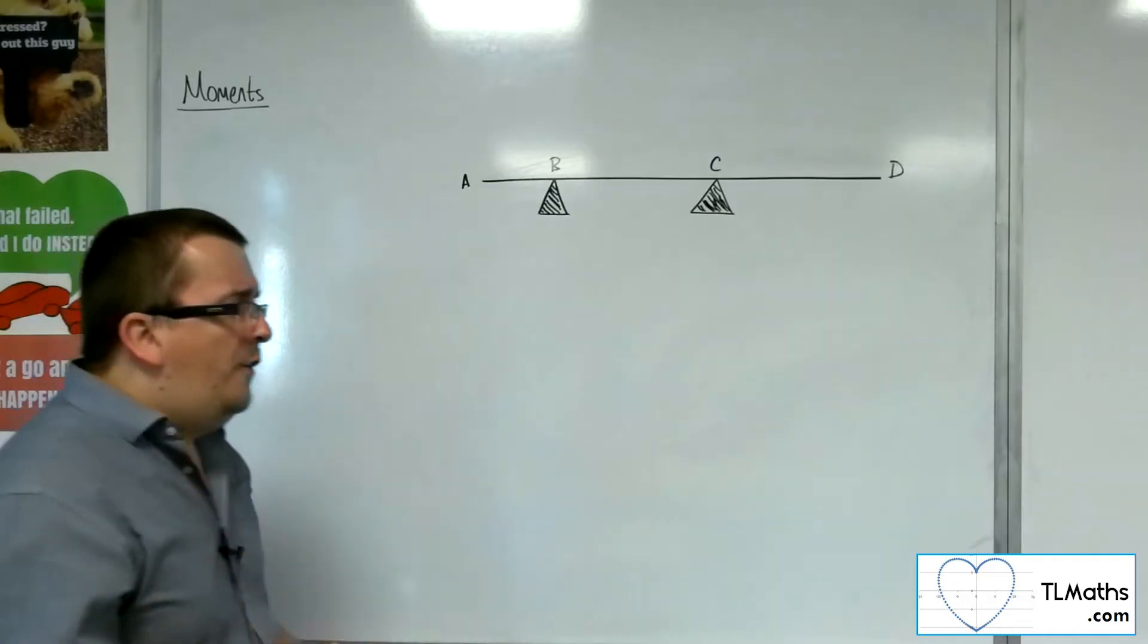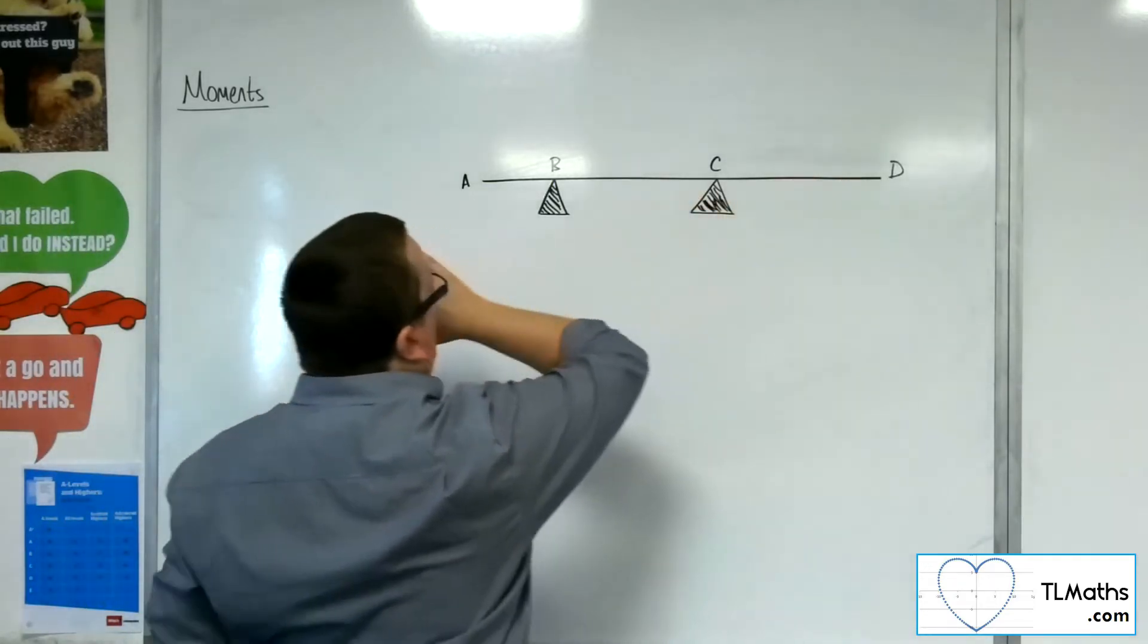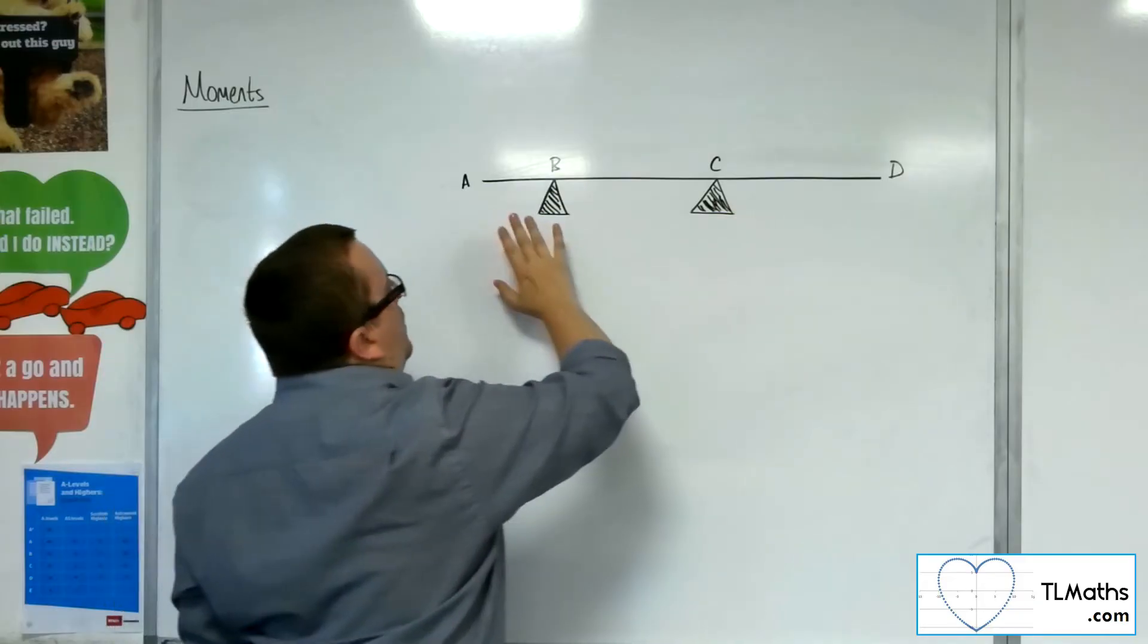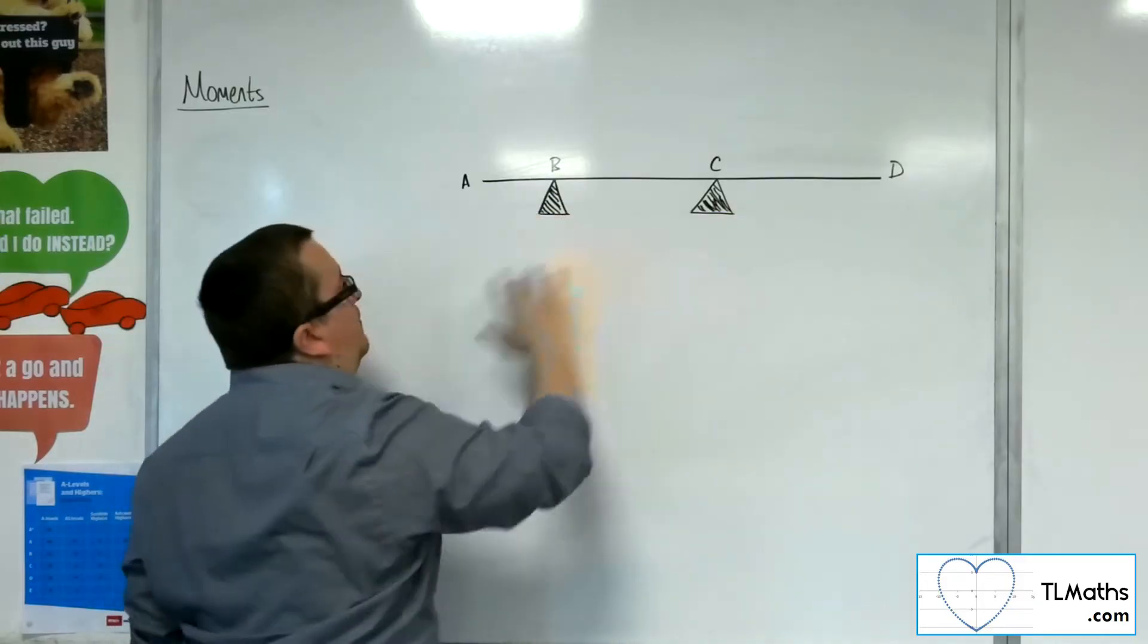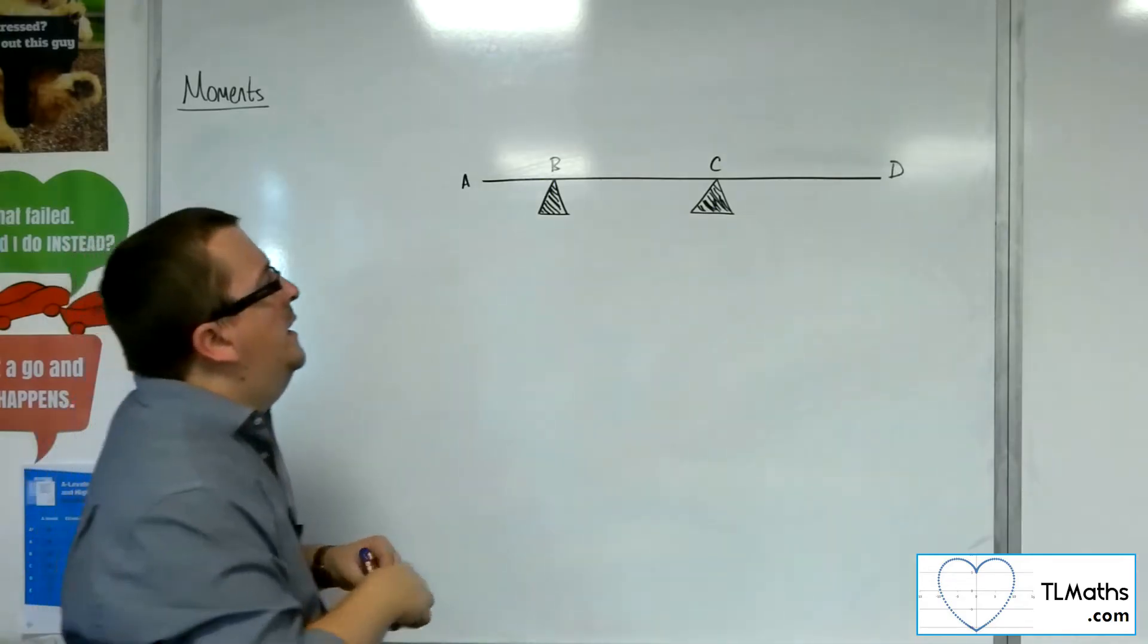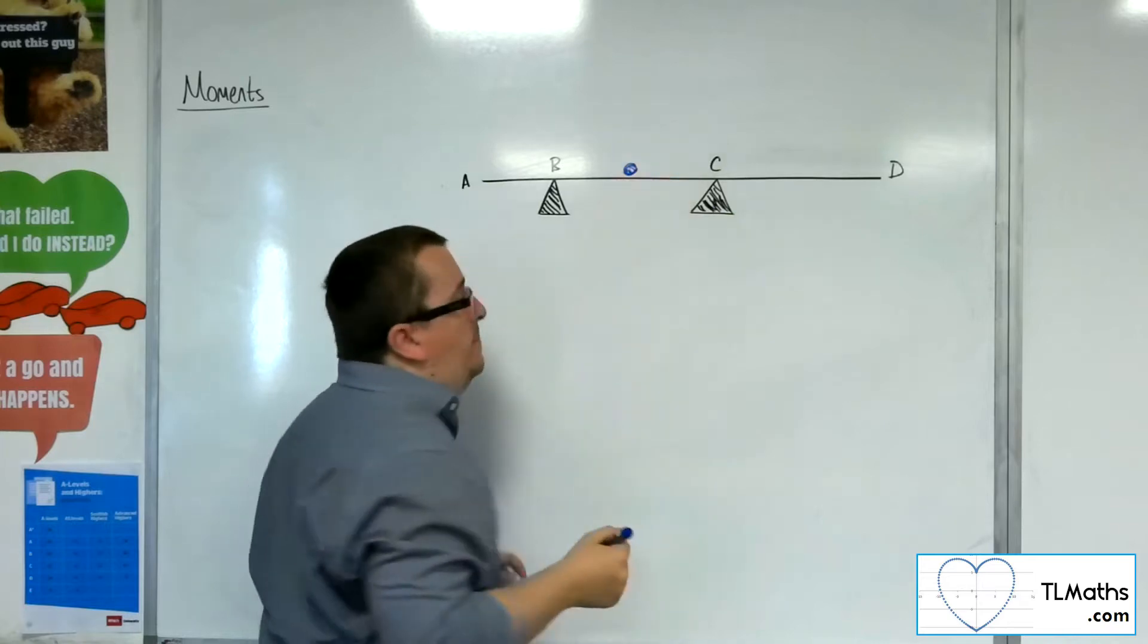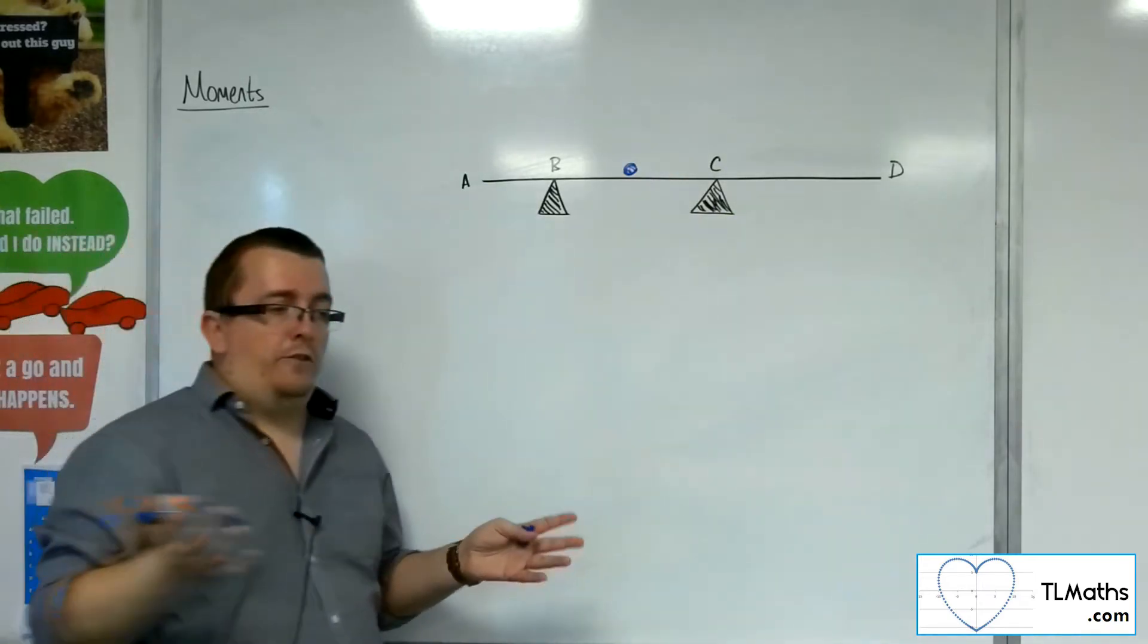If I placed a particle—so let's say I've got this uniform rod from A to D, and there are these pivots at B and C that are holding it in place. If I placed a particle between B and C of a certain weight,